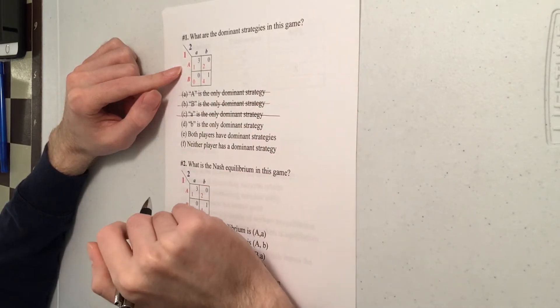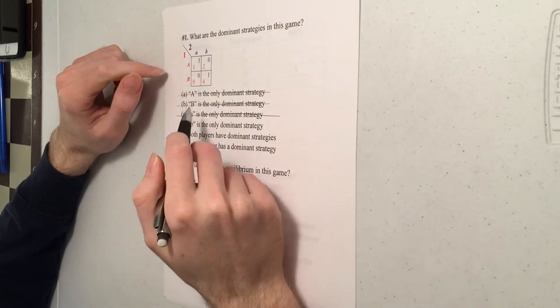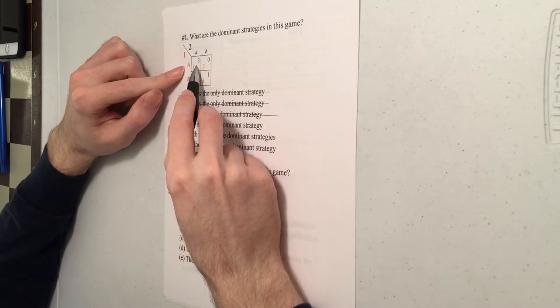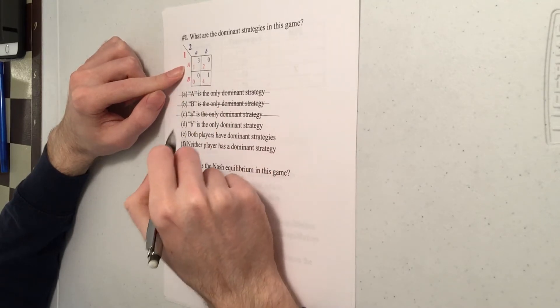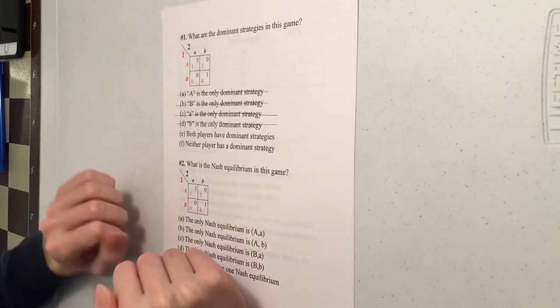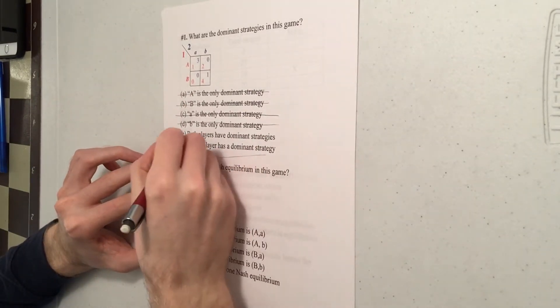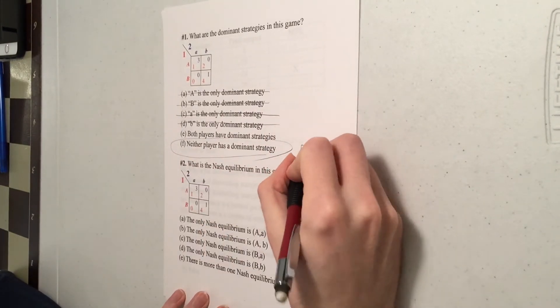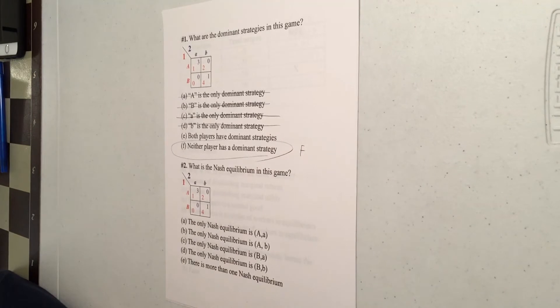We showed that little b is also not dominant. That's because if player one plays big A, it's better to play little a and get three than play little b and get zero. So what's going on here is that actually neither player has a dominant strategy. So the correct answer would be F.